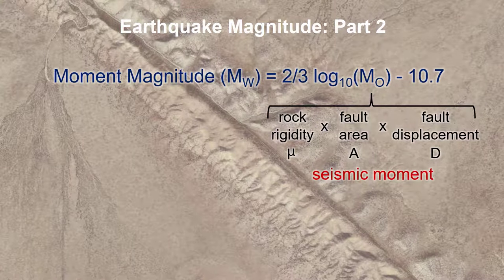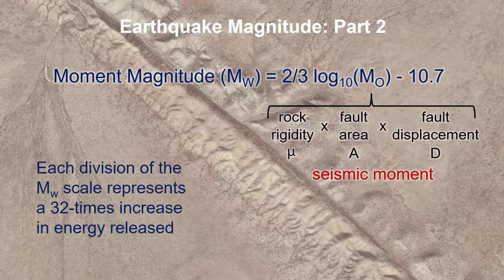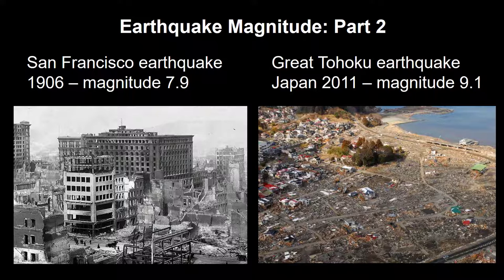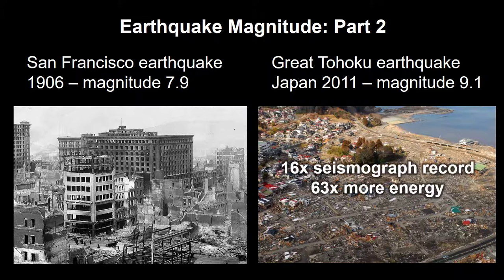Geologists, or really superfast computers, plug this seismic moment value into an equation to determine the moment magnitude, and that's the value that gets reported when you read about big earthquakes in the news. Not only does the recording on the seismograph increase in size by 10 for each step up in magnitude, but the energy released by the earthquake increases 32 times. For example, let's compare the 9.1 magnitude earthquake in Japan with the 7.9 magnitude San Francisco earthquake. The earthquake in Japan would have been nearly 16 times larger on the seismograph record and would have released 63 times more energy.